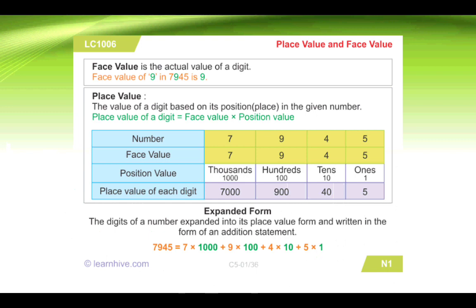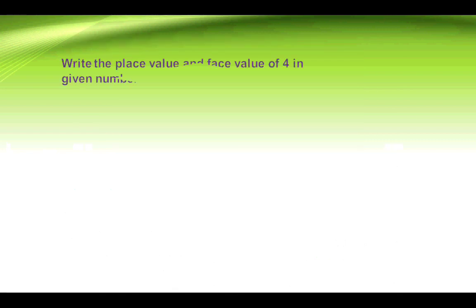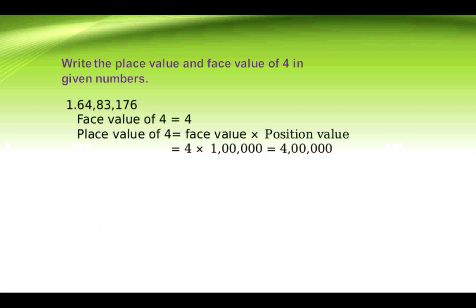Expanded form: the digits of a number are expanded into their place value form and written as an addition statement. For example: 7945 = 7 × 1000 + 9 × 100 + 4 × 10 + 5 × 1. Let's do some questions related to this topic.